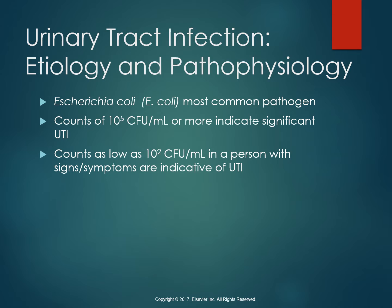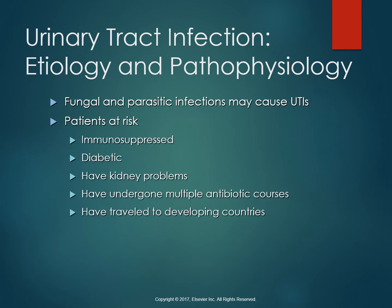E. coli is the most common pathogen causing UTI. It's primarily seen in women. Most infections are due to this gram-negative bacilli, which is normally found in the GI tract, although some gram-positive organisms such as streptococci, enterococci, and Staphylococcus saprophyticus can also cause urinary tract infections. We usually see signs and symptoms of UTI when there are 10 to the 5th colony forming units per mL on urinalysis, but sometimes counts lower than that can show clinical manifestation of UTI. Sometimes fungal and parasitic infections can also cause UTIs, with at-risk patients for different types of these infections.